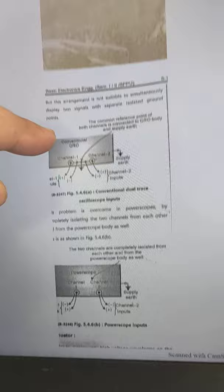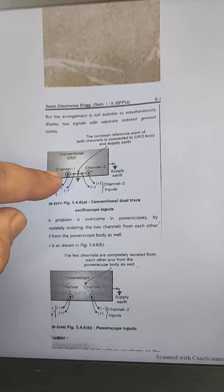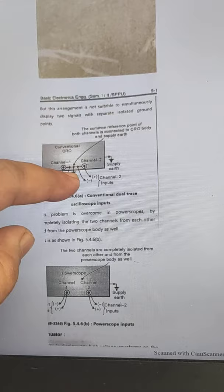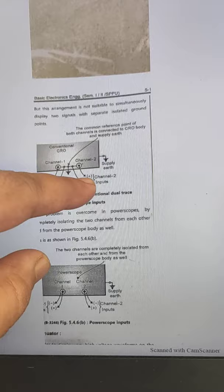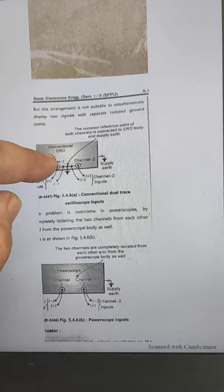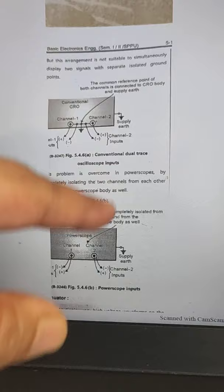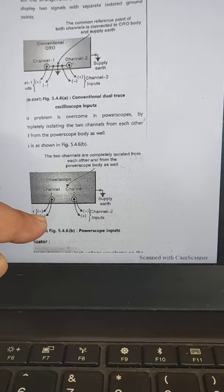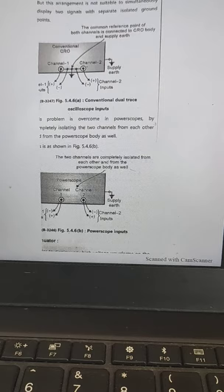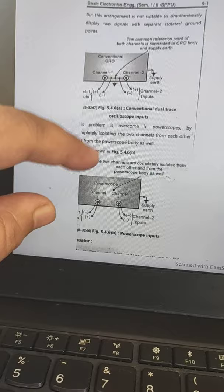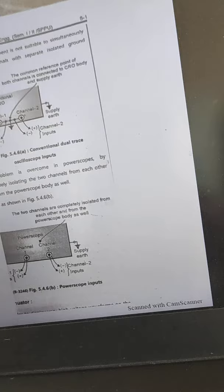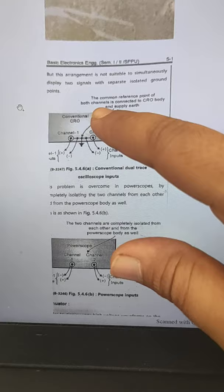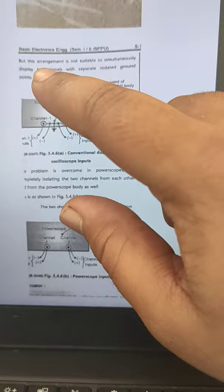In a conventional CRO, Channel 1 has a positive and negative connection, with a common reference point connected to ground, and Channel 2 likewise has positive and negative connections. In the exam, if the question asks you to draw and explain a power scope, you must draw a diagram showing the conventional CRO and how, unlike a conventional CRO where two waveforms cannot be displayed simultaneously, the power scope uses two separate channels to display two waveforms at the same time.